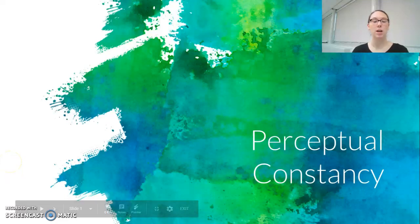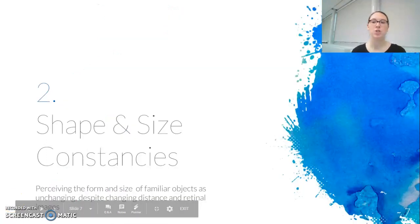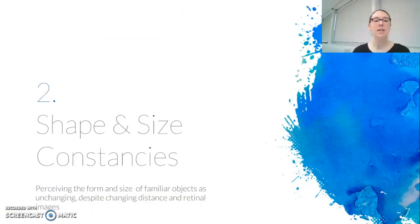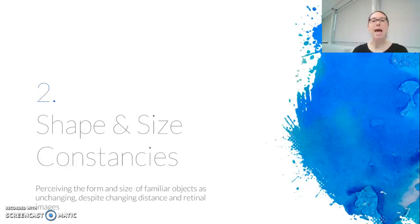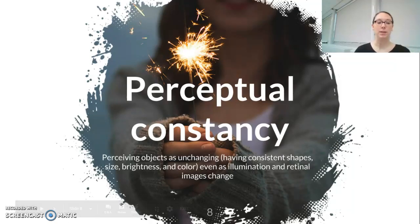Continuing with perceptual constancy, we're now going to talk about shape and size constancy. A working definition is that we're able to perceive both the form and size of familiar objects as unchanging, despite changing distance and retinal images. If we take the understanding of what perceptual constancy is — being able to hold certain things constant about what we're looking at — we looked at color and brightness, and now we're going to look at shape and size.